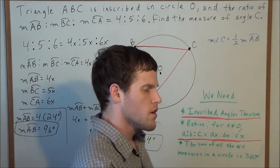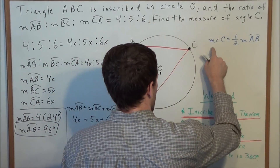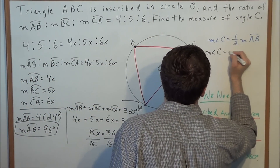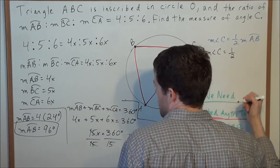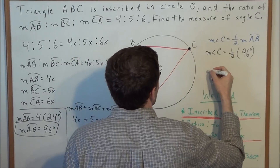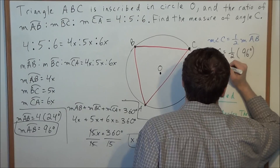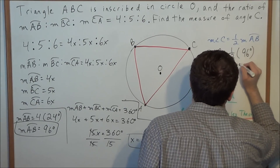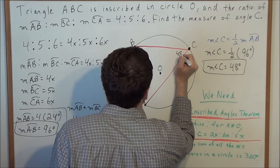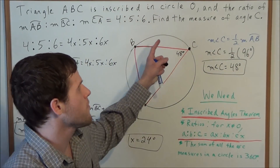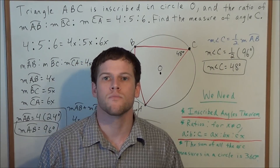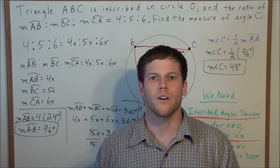Now we substitute back into the inscribed angles theorem equation. The measure of angle C equals one half the measure of arc AB, and we found arc AB to be 96 degrees. So the measure of angle C equals one half of 96 degrees, which equals 48 degrees. We can label this on the diagram as well. The measure of angle C equals 48 degrees. Thank you all for watching, and I hope this was helpful.